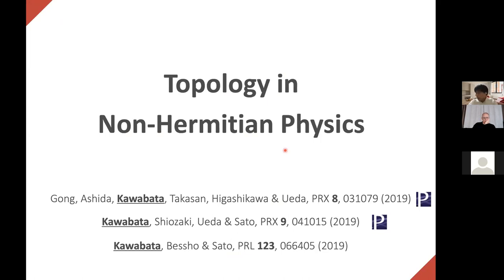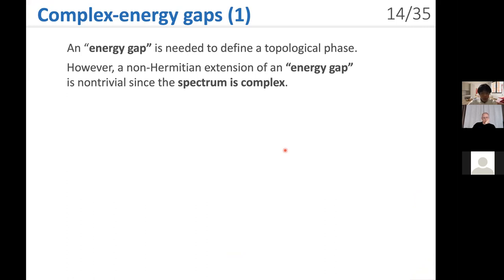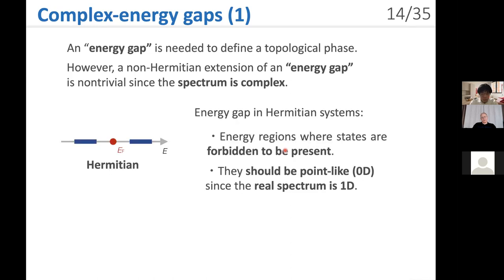Next we discuss topological characterization of non-Hermitian systems. An energy gap is needed to define a topological phase. However, a non-Hermitian extension of an energy gap is non-trivial, since the spectrum is generally complex. To consider an energy gap in non-Hermitian systems, let's revisit the energy gap in Hermitian systems. An energy gap is identified as an energy region where states are forbidden to be present — it should be point-like or zero-dimensional in parameter space, since the spectrum is real and one-dimensional. Since the complex spectrum has both real and imaginary parts and is two-dimensional in parameter space, such a vacant region can be a zero-dimensional point or a one-dimensional line.